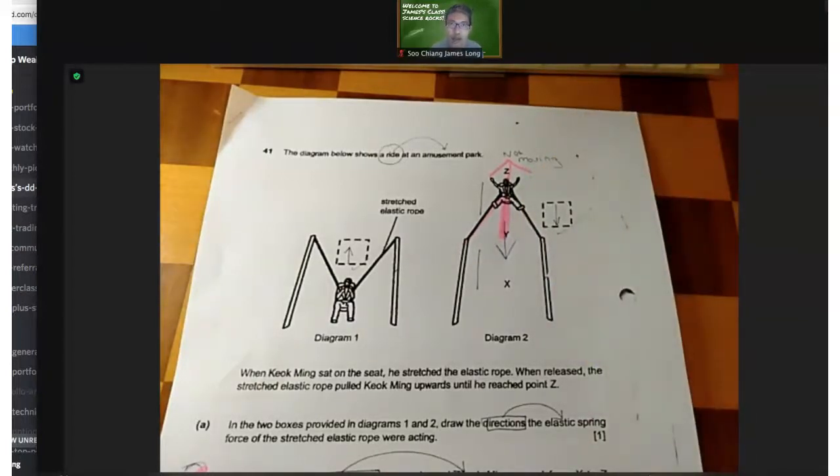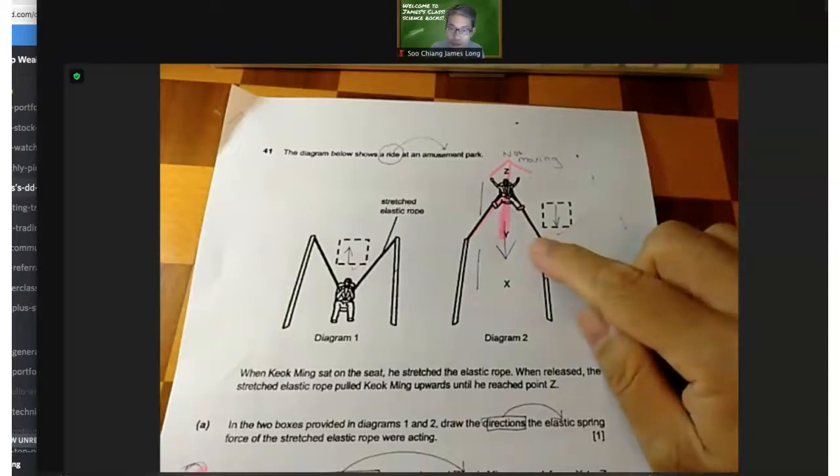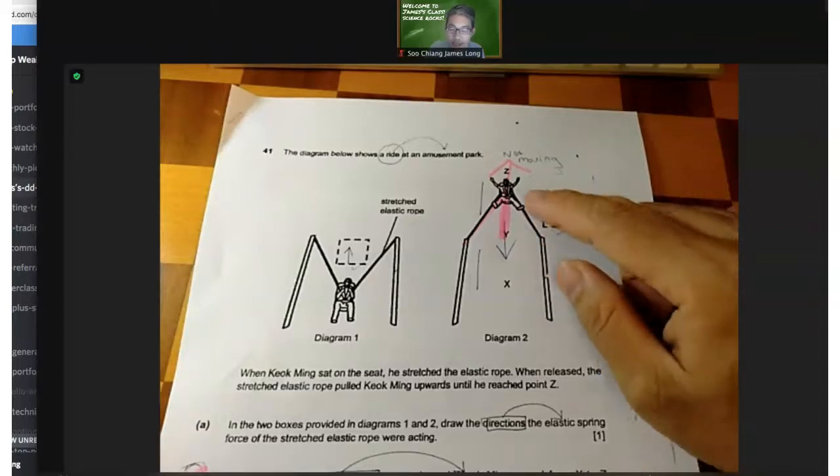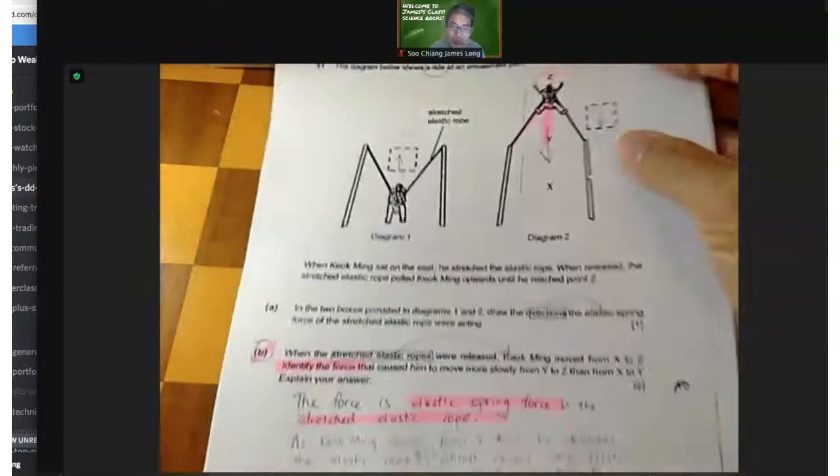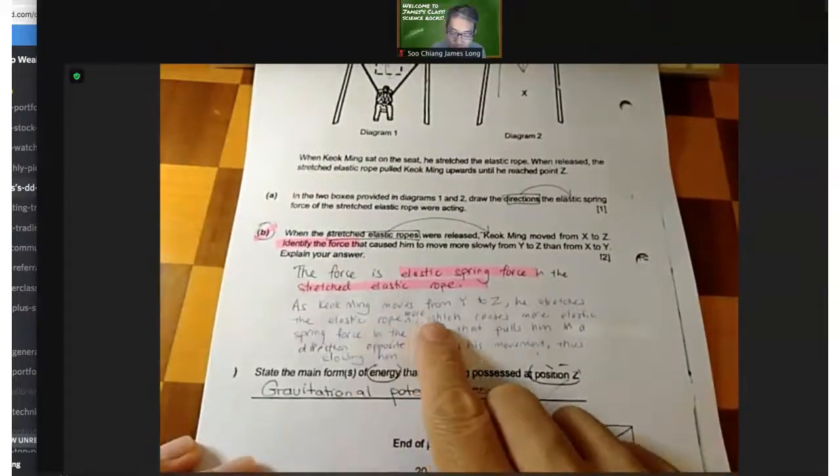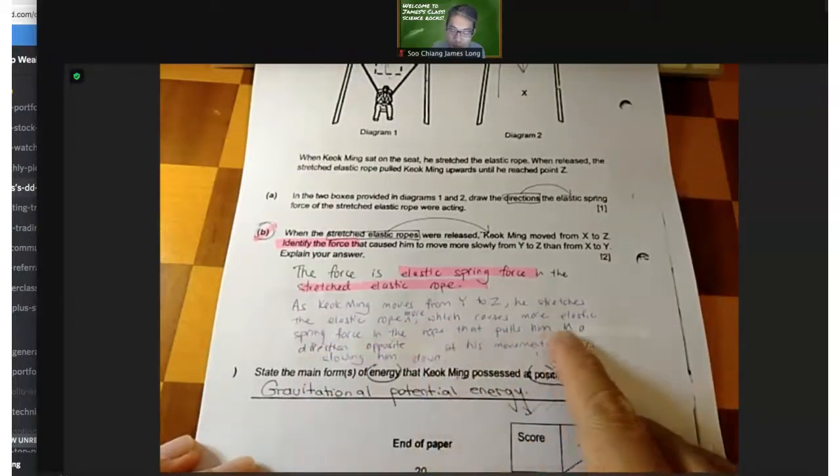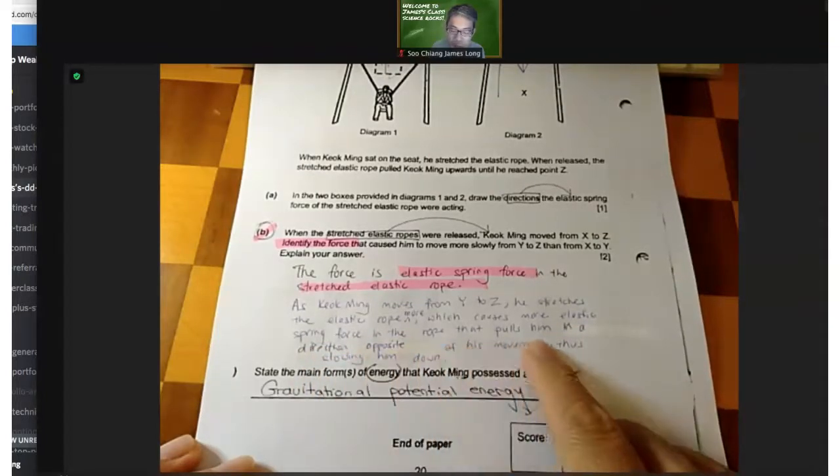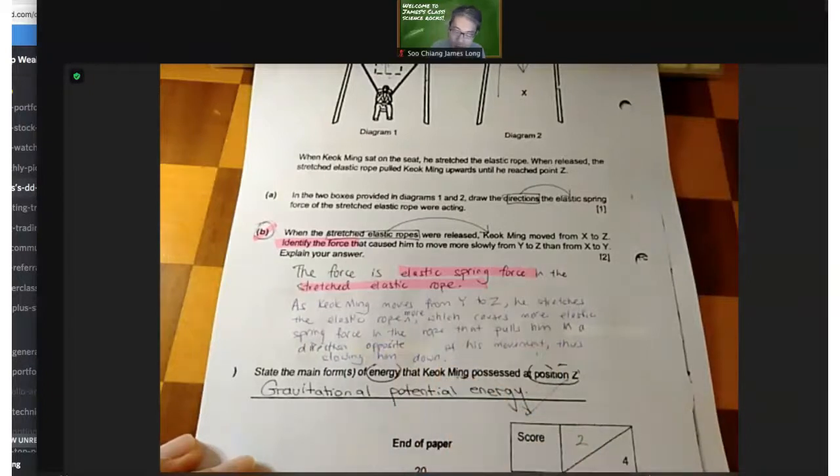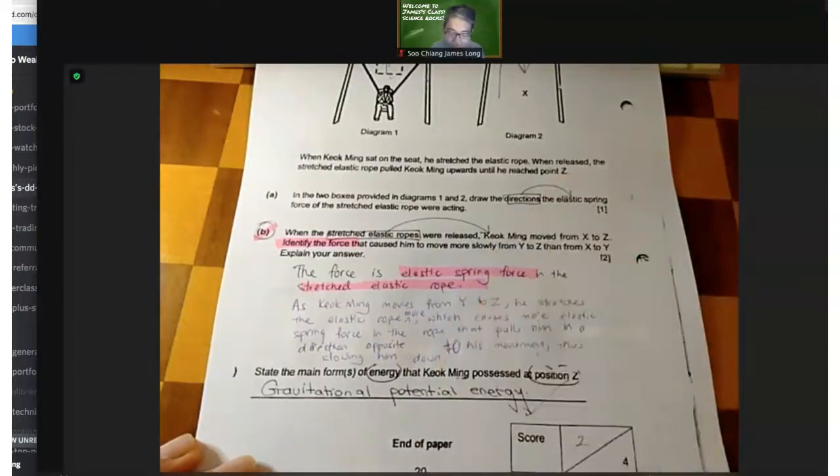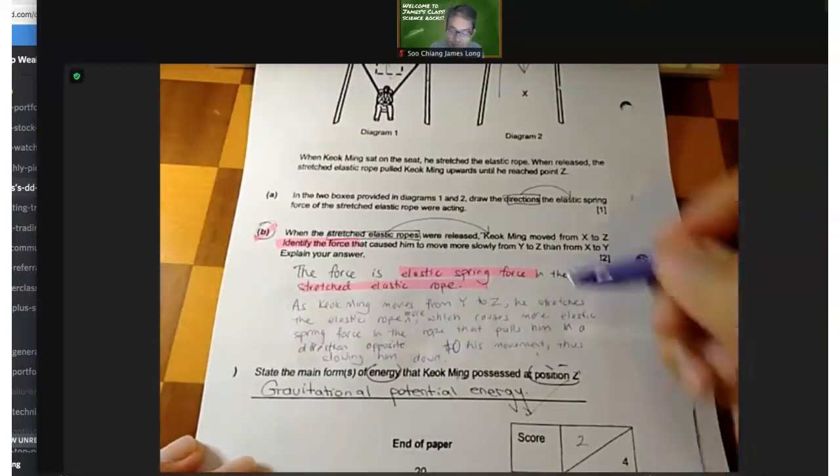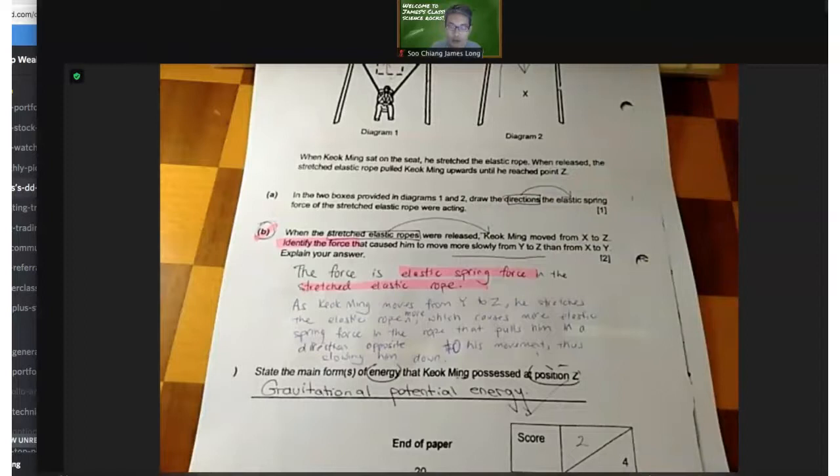The more you try to go forward, the more this elastic spring rope tries to pull him back down, and of course that will slow him down because his direction of movement is in this direction, whereas the elastic rope is pulling him in the opposite direction. Therefore it will slow him down just like frictional force. There's a force that goes against the direction of motion. In this case, it is not frictional force, but the idea is similar.